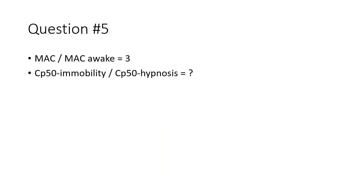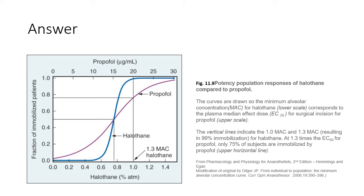The concentration of volatile anaesthetic required to keep half the population still is about three times the concentration required to keep half the population unconscious — that's the difference between MAC and MAC awake. We all know that propofol is far worse at keeping patients still because of its lack of effect on the spinal cord. Looking at a graph from the textbook by Hemmings and Egan, with anaesthetic concentration on the x-axis and fraction of patients keeping still on the y-axis: the median immobility concentration for halothane — i.e. MAC — is about twice that of its hypnotic concentration. For propofol, on the other hand, the immobility concentration of 15 mcg/mL is more than seven times its average hypnotic concentration of 2 mcg/mL.